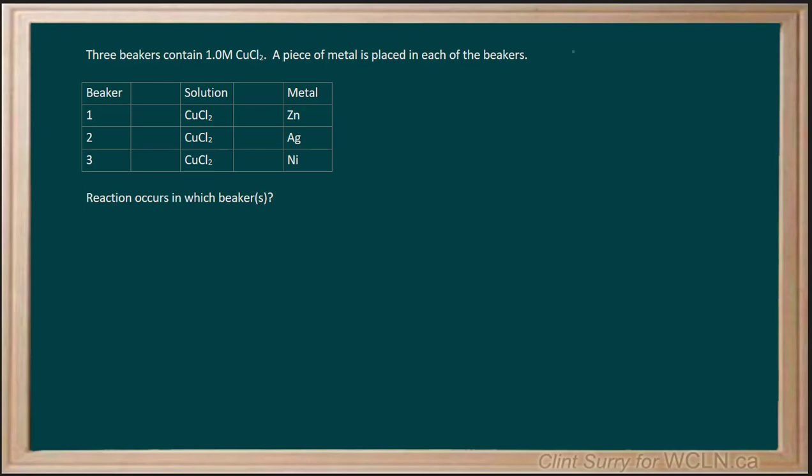We know that we've got copper plus 2 from the copper chloride solution. We've got chloride minus 1 ion from the copper chloride solution, and then we're going to have zinc, silver, and nickel as possibilities.